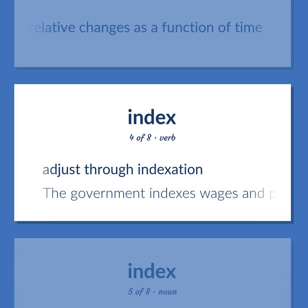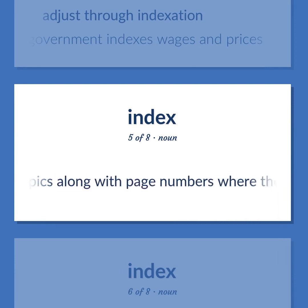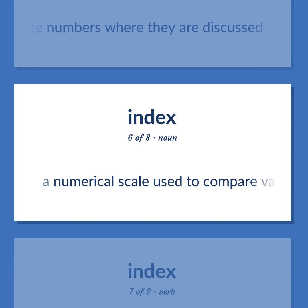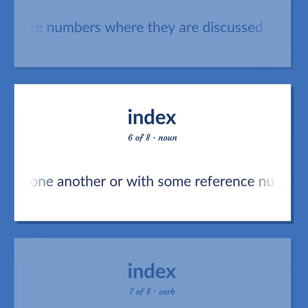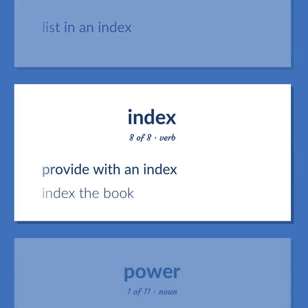Index: the finger next to the thumb. A number or ratio — a value on a scale of measurement derived from a series of observed facts, can reveal relative changes as a function of time. Adjust through indexation — the government indexes wages and prices. An alphabetical listing of names and topics along with page numbers where they are discussed. A numerical scale used to compare variables with one another or with some reference number. List in an index. Provide with an index — index the book.